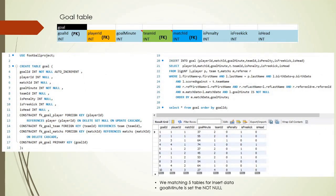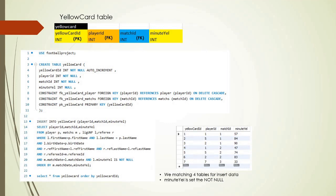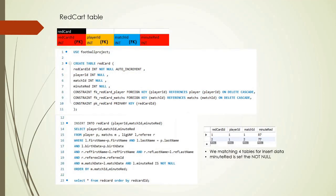The next 3NF table is the goal table. It contains information about goals, with goal ID as the primary key and three foreign keys. We use five tables to collect data and filter by goal minutes not being null from the UNF table. The yellow card table gives information about when yellow cards are used in a match — we use four tables and set the minute_yel attribute as not null while searching the UNF table. The last table is the red card table, similar to yellow card, also using four tables with minute_red set as not null.